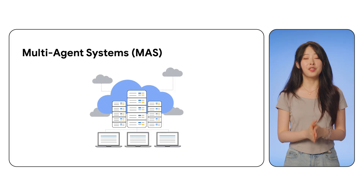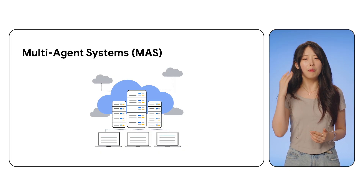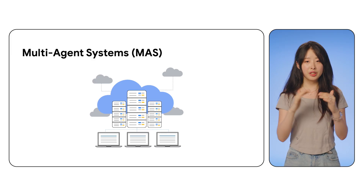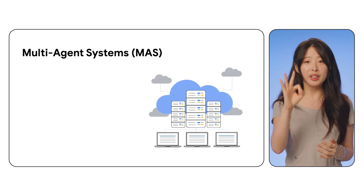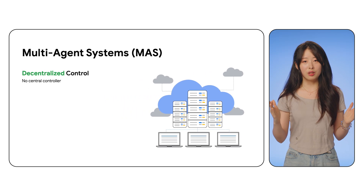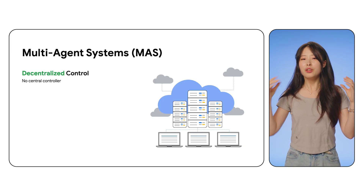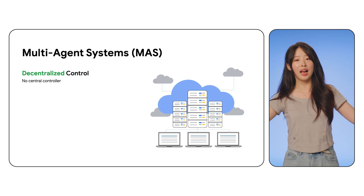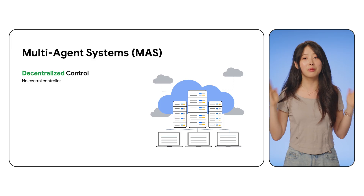The first part of this episode is: what is a multi-agent system? At its core, a multi-agent system is when individual agents work together. To really understand it, let's break it into three key ideas. The first is decentralized control — there's no single boss. Each agent just decides for itself. You can think of it like a flock of birds swirling in the sky. There's no leader, but together they form amazing, incredible patterns.